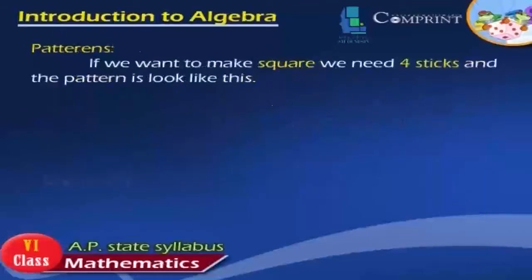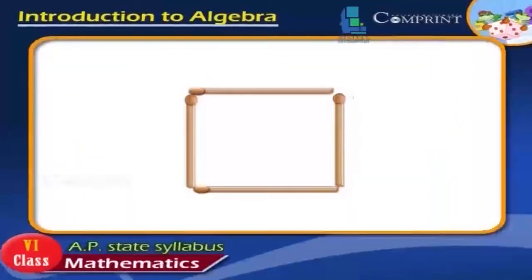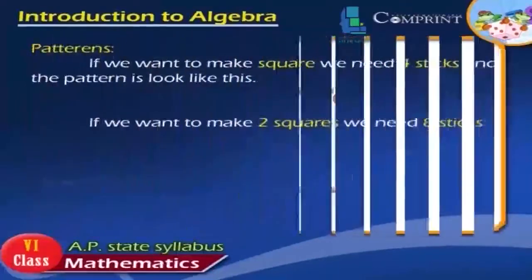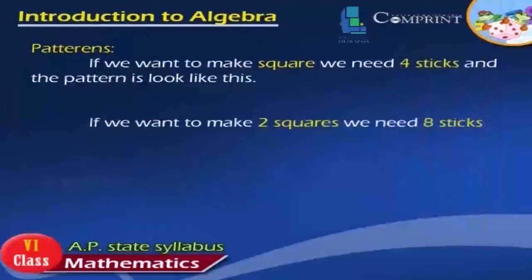Patterns. If we want to make a square, we need four sticks, and the pattern looks like this. If we want to make two squares, we need eight sticks.